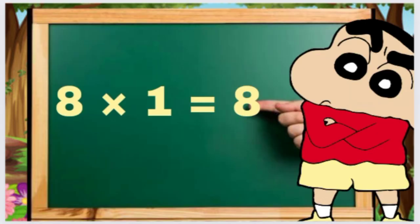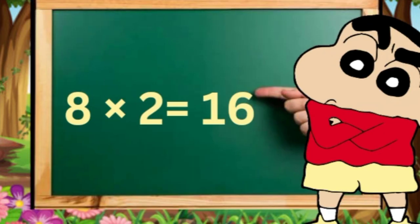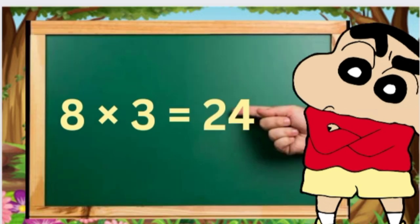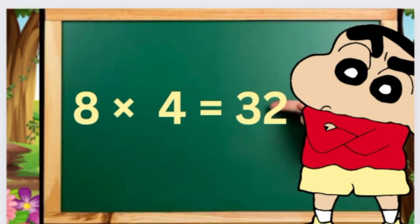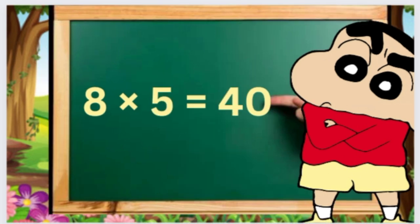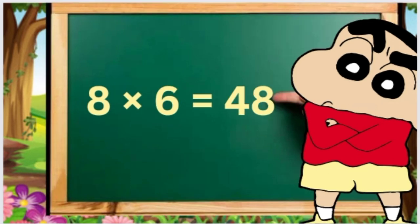Now we know the table of eight. Eight, one's eight. Eight, two's sixteen. Eight, three's twenty-four. Eight, four's thirty-two. Eight, five's forty.